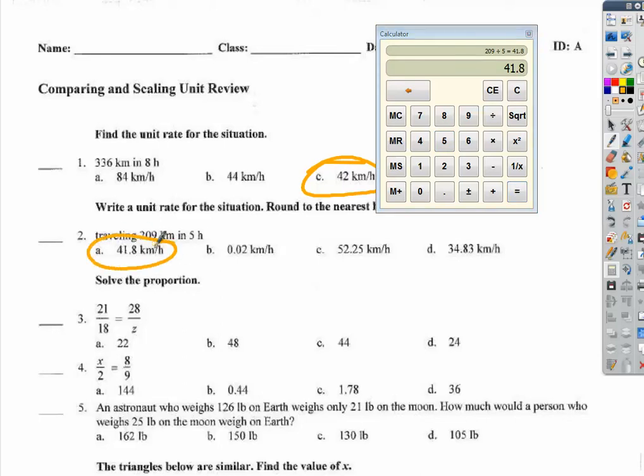Solve the proportion. Now, there are a couple ways we can solve proportions. This one I'm going to do as a fraction and I'm going to reduce it. I know that 3 goes into 21 and 18. So, 21 divided by 3 is 7. 18 divided by 3 is 6. So now I have 7 over 6. I know if I multiplied 7 by 4, I get 28. So, I multiply 6 by 4 and I get 24.